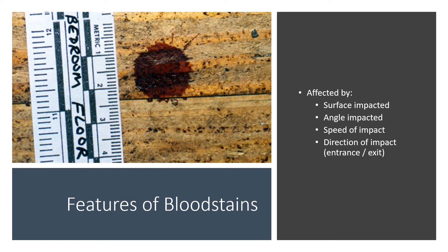Features of bloodstains: the appearance of blood can be affected by the surface impacted. This droplet of blood hit a hardwood floor that appears to be unfinished, so the blood soaked into the wood a fair bit, creating a semi-gloss appearance with absorption into the wood itself. If you had that same droplet on a freshly waxed basketball court, it would look much different because none of it would soak in. If you put that same droplet down onto a sofa, it's going to soak in pretty readily, assuming the sofa hasn't been treated in any way.